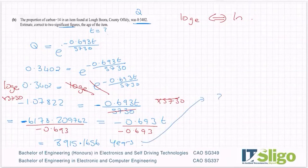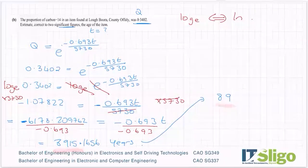So my answer then could not be 89 because there's no way you could represent 8950 with 89. So instead of putting in the non-significant figures or leaving them out, you put them in as zeros. So it's 8900 years. That is 8915.1656 to two significant figures.